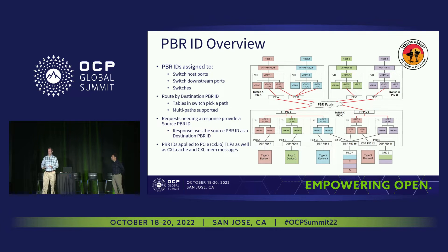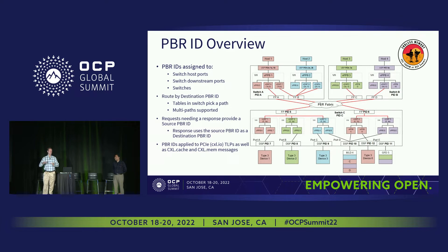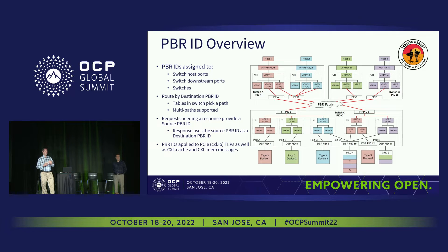The next slide gets into a lot of details. In the 3.0 release, we introduced port-based routing and these topologies, but there's another level of detail. The 3.1 upcoming release will get into more of those details. This is where we get input from multiple CXL members saying, 'This use case is important to me' or 'This is where I want to go.' That's what we're working towards.